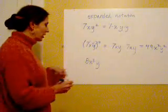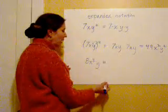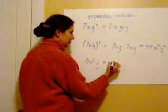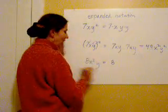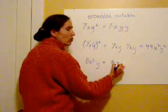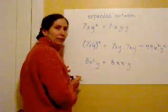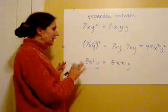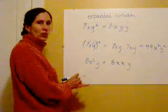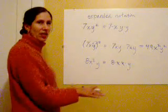Okay, this example here, in expanded form, is 8 times x squared times y. So the only thing that's getting squared is the x. The 8 has nothing to do with that.